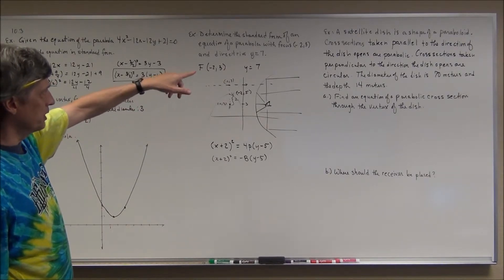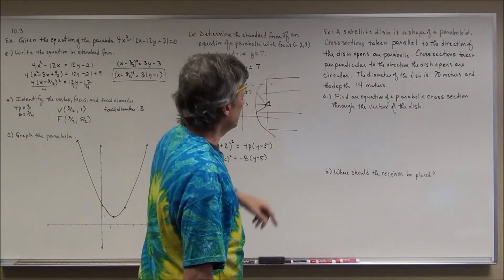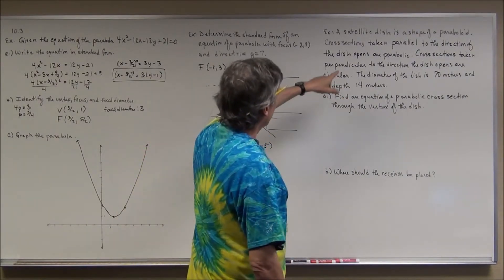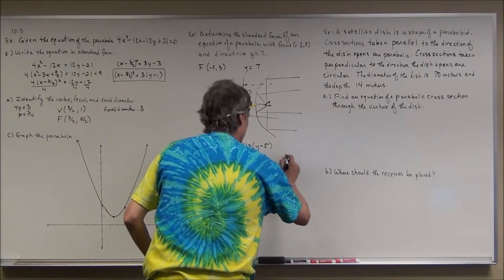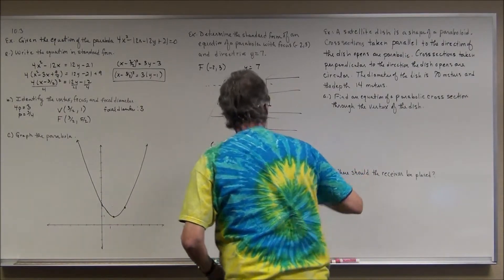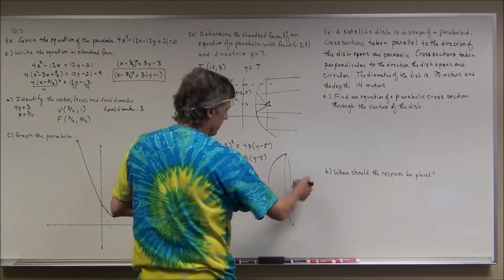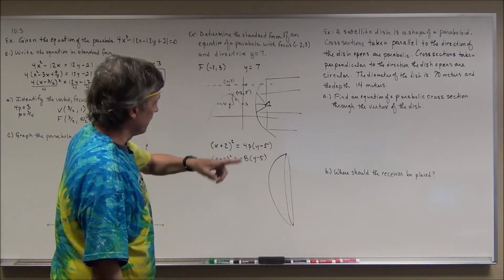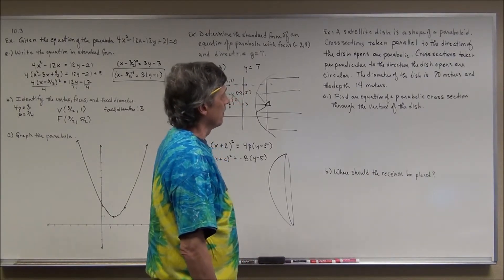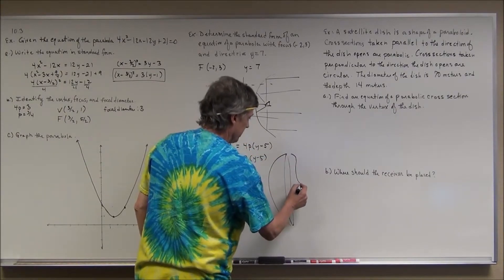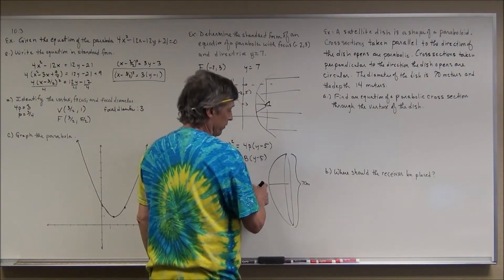This problem involves a much larger satellite dish. Cross sections taken parallel to the direction the dish opens are parabolic. Cross sections taken perpendicular to the direction the dish opens are circular — because if you look at the dish straight on, you'd see a giant circle as the outline. The diameter of this dish is 70 meters and the depth from rim to vertex is 14 meters.